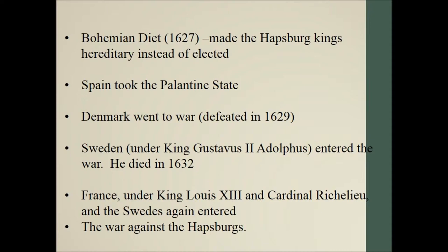The Defenestration of Prague really started this Thirty Year War. In 1627 you have something called a Bohemian Diet — here a diet means a conference — at which the Habsburg kings became hereditary rather than chosen, to solidify power. Some other countries also got involved: Spain, Austria, and Prussia fought on one side, and Denmark, Sweden, and France on the other.